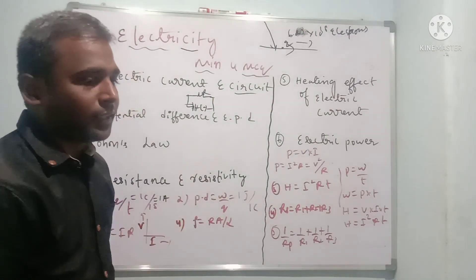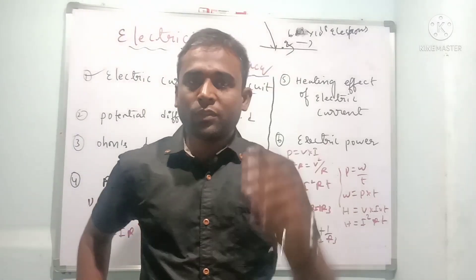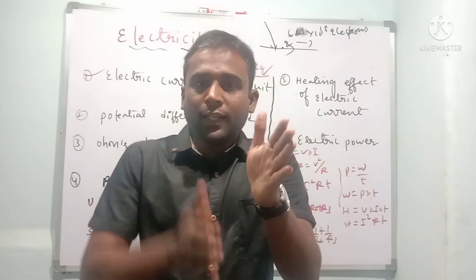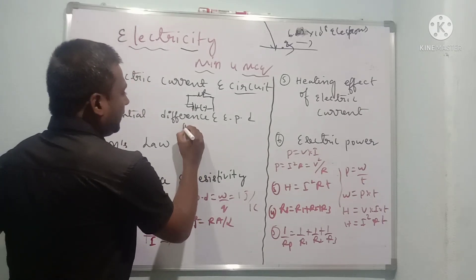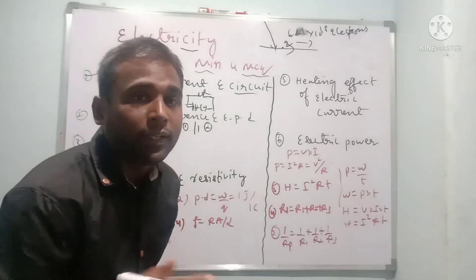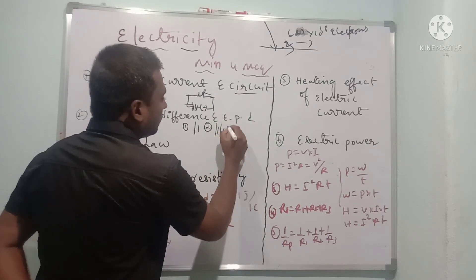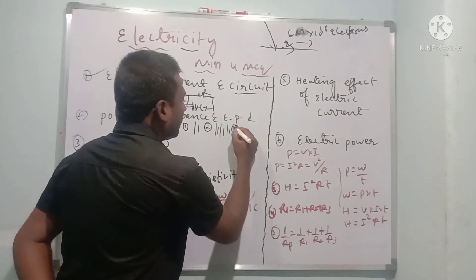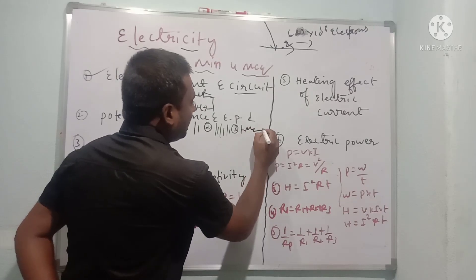Let us understand all the circuit symbols within three minutes. First, a cell is represented by a big line and a small line. A combination of cells becomes a battery. The symbol for a resistor is drawn with a zig-zag motion.